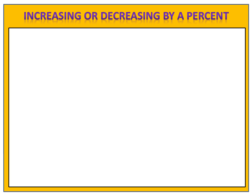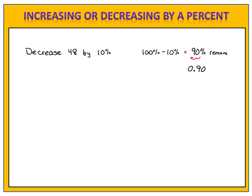Now let's look at the situation where we decrease by a percent. Suppose we want to decrease 48 by 10%. We started with 100% of what we had, and we took 10% away, so we have 90% remaining. When we're decreasing, we're asking what percent is left — if 10% is taken away, 90% is left. 90% converted to a decimal is 0.90. Multiplying 48 by 0.90, we find the result is 43.2.